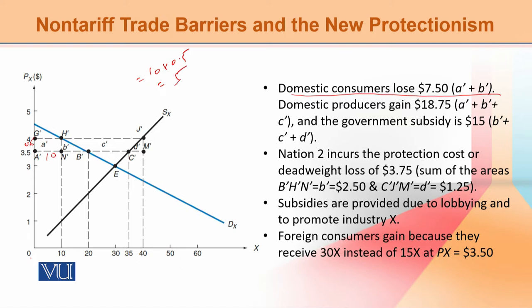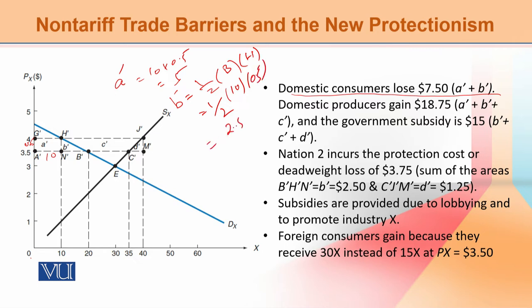The area of A-bar is a rectangle: 10 × 0.5 = 5. The area of B-bar is a triangle, using the formula: ½ × base × height = ½ × 10 × 0.5 = 2.5.